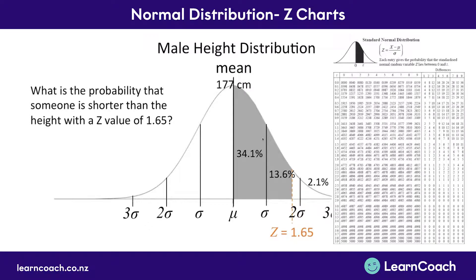This z-chart gets given to you in your resource booklet. It looks complicated, but it's just a matter of reading the top and the sides. We start off with our z-score of 1.65. First, we look down the very left-hand column and find 1.6 — the first two digits of our z-score. Then we go across to the 5 column up the top. We move down that column until we find what number aligns with both of these points, with 1.65, and we find that number is 0.4505.